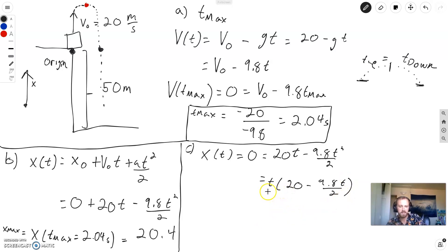So, t can either be equal to 0. Time t equals 0 will make this equation true. Or, time equals 2 times 9.8 divided by 20. Right? Because if you plug in this time into here, this entire side will also be 0. So, this is another time that gives us x equals 0. And, this is 4.08 seconds. 2 times my height up. Right here.